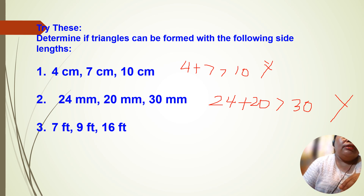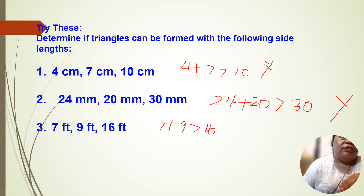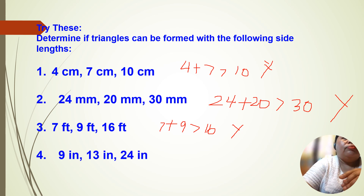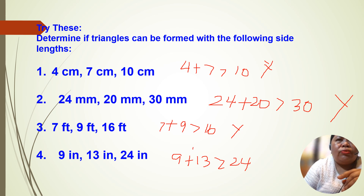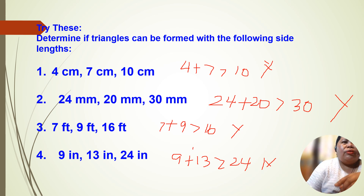7 plus 9 — is it greater than 16? 7 plus 9 is 16, so it's equal to 16, not greater than 16. So the answer is no — we cannot form a triangle. Next: 9, 13, and 24. Is 9 plus 13 greater than 24? 9 plus 13 is 22. 22 is less than 24, so the answer is no. It's not possible to form a triangle using 9, 13, and 24.